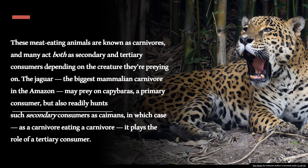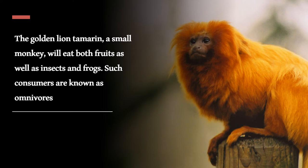Next, we move on to secondary and tertiary consumers, which comprise the hardcore carnivorous animals. These meat-eating animals are known as carnivores, and many act both as secondary as well as tertiary consumers. The jaguar is the biggest mammalian carnivore in the Amazon, which feeds on the capybara — a primary consumer — but also readily hunts secondary consumers such as caimans, making it a tertiary consumer as well. The golden lion tamarin, a small monkey, eats both fruits and insects and frogs — such consumers are known as omnivores.